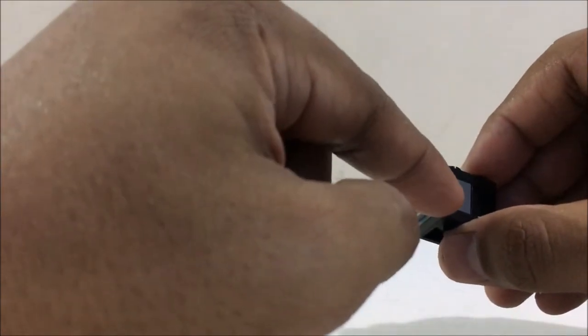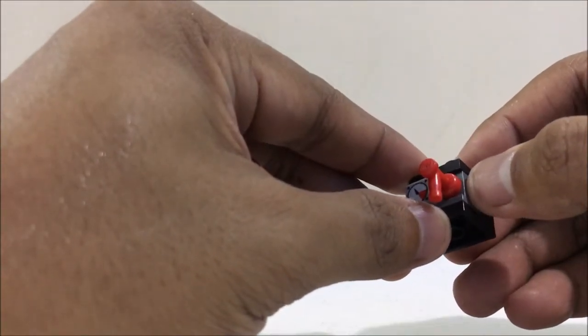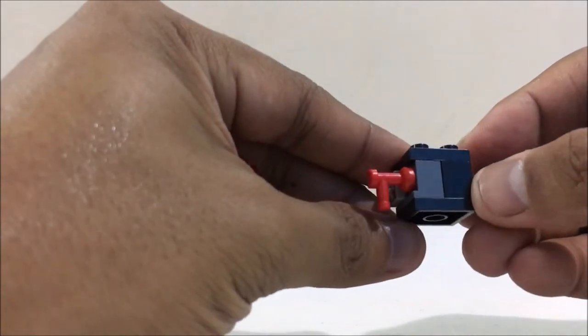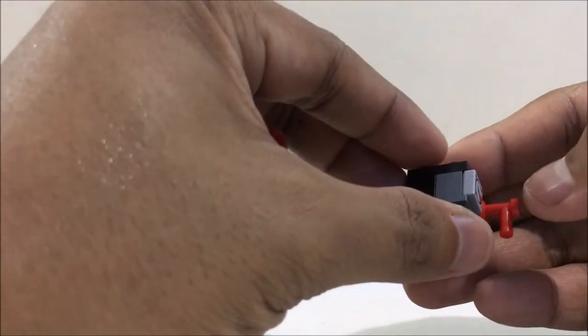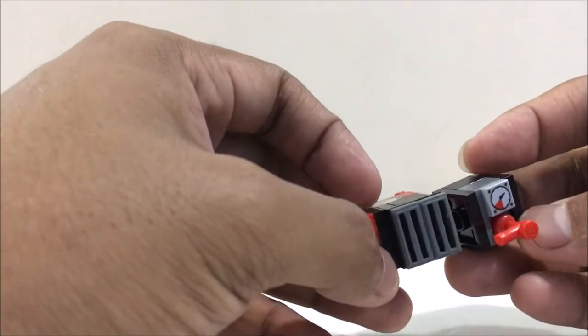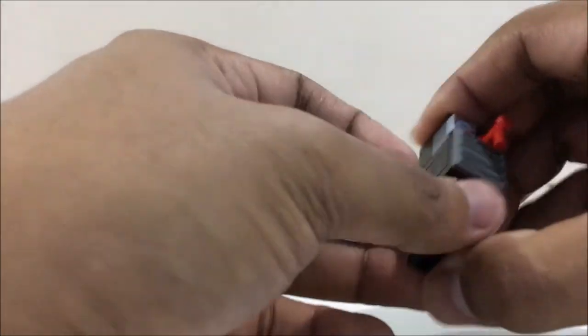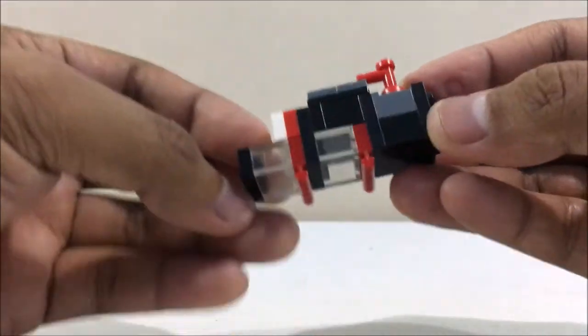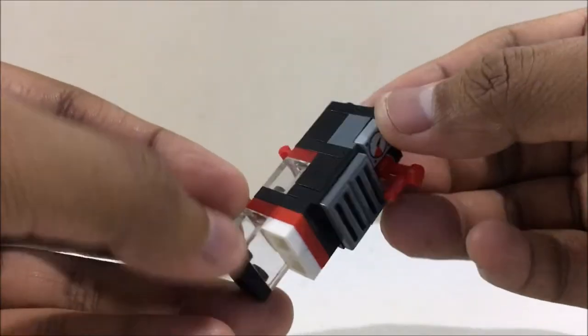And two of this 1x1 brick with studs on the side, gray in color. If you want, you can also use black ones. So just put it on top. That's it. That's how you build the oven.